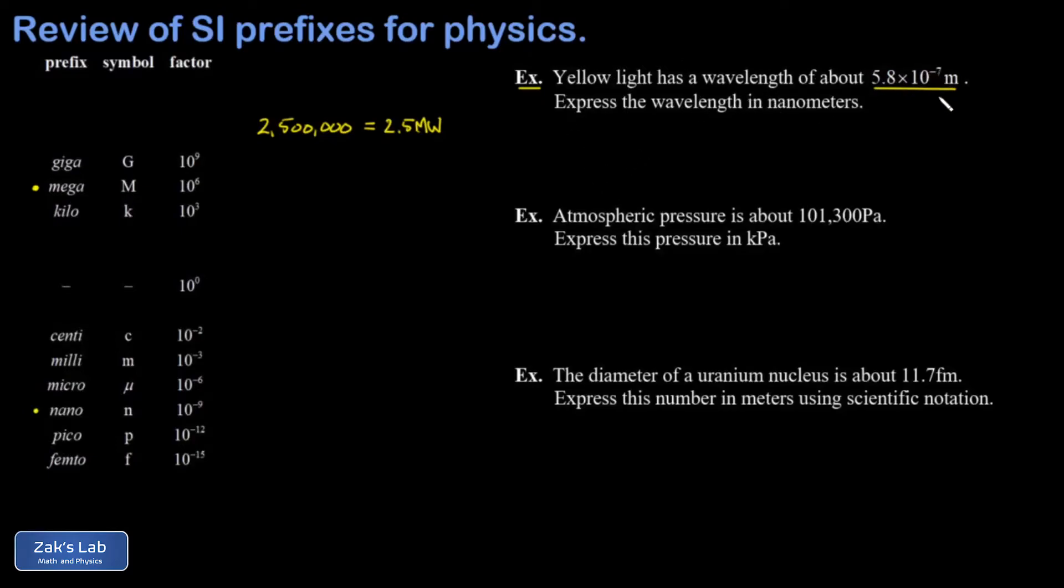The way we're going to get this done is by dividing 10 to the negative 7 by 100. In other words, dividing it by 10 squared subtracts 2 from that exponent and gives us 10 to the negative 9. So we're going to make up for that by multiplying the 5.8 by 100.